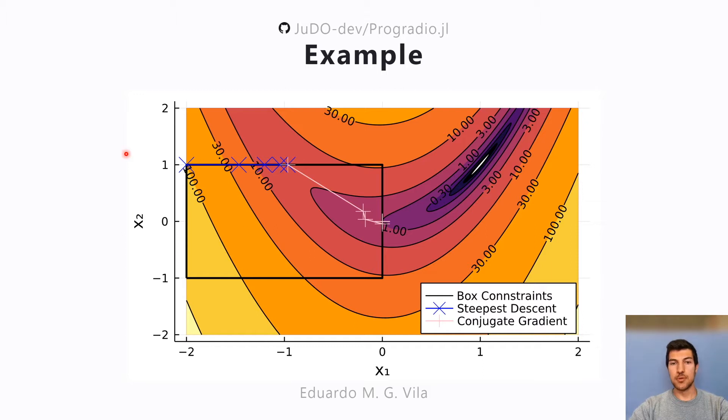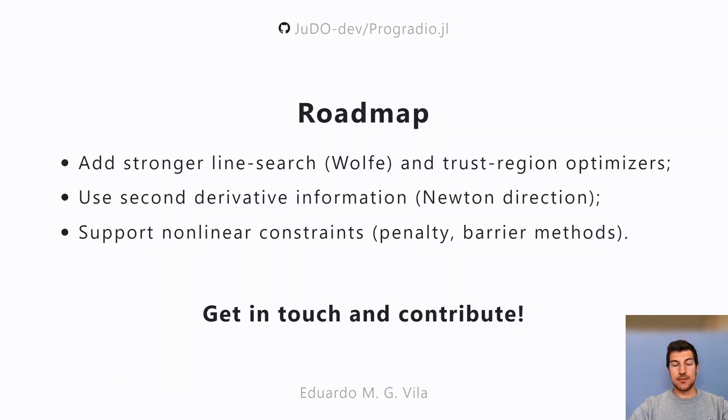This really opens a world of possibilities for the optimization community in Julia. The future plans for this package include adding a stronger line search condition of the Wolfe type, and also adding trust region optimizers, second derivative information such that you can get Newton directions, and obviously add support for general non-linear constraints, which can be done by a penalty or barrier approach.